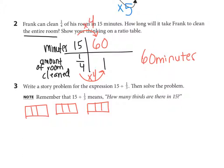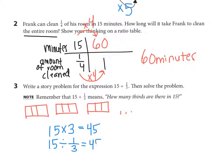I can think of 15 chocolate bars, each having three thirds. So 15 times 3 equals 45. Therefore, 15 divided by one-third equals 45, which is the same as 15 times 3.